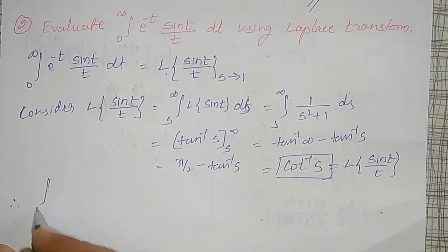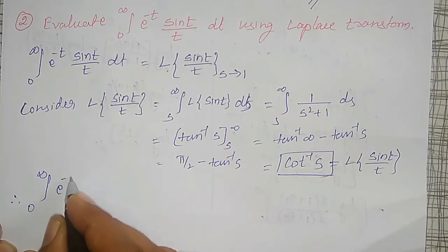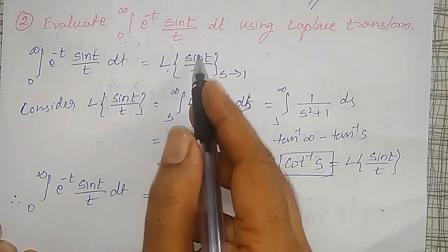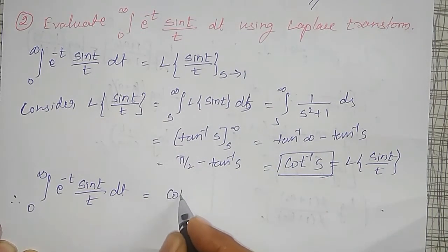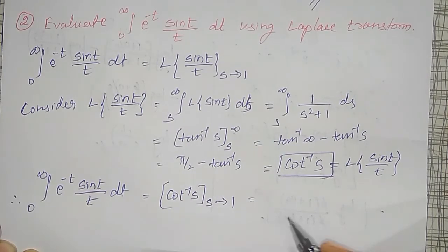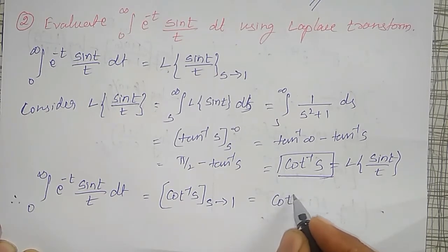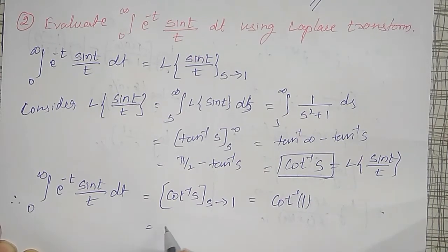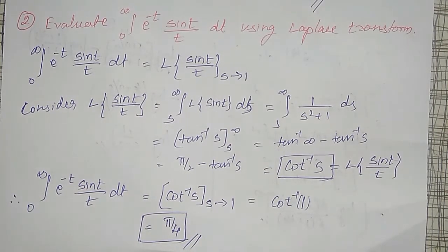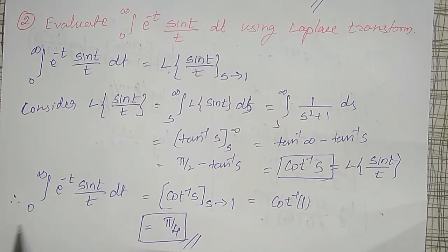Therefore, the final answer: the integral from 0 to infinity of e^(-t) · sin(t)/t dt equals the Laplace transform of sin(t)/t which is cot⁻¹(s), with s replaced by 1. That gives cot⁻¹(1) = π/4. Therefore the evaluation of this integral is π/4. Using Laplace transforms it is simple to evaluate such integrals where a function is multiplied by e^(-t) and integrated from 0 to infinity.